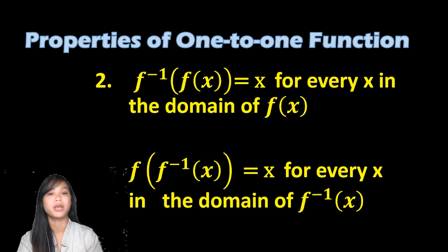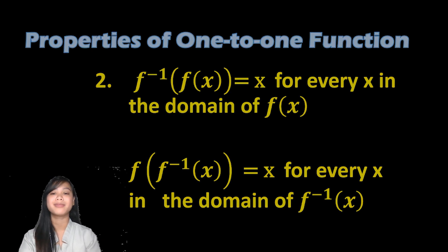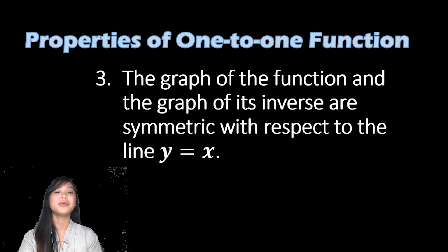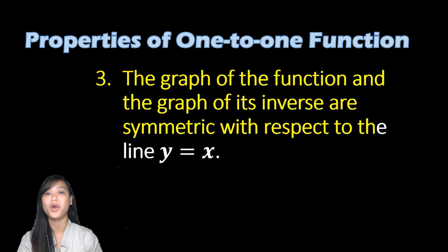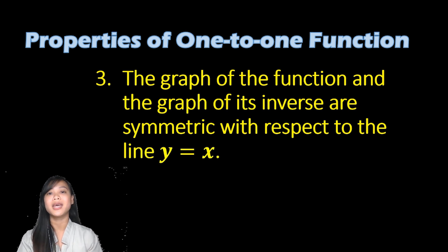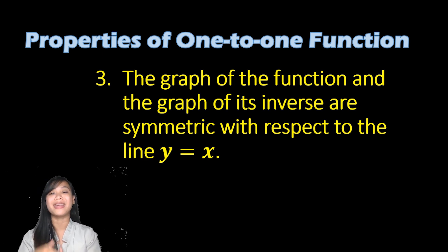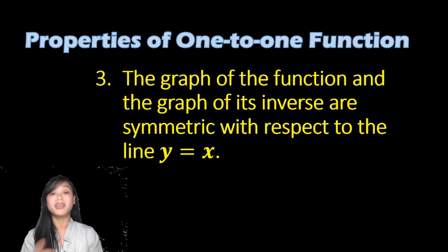For the third property, the graph of the function and the graph of its inverse are symmetric with respect to the line y equals x. In other words, the graph of the inverse function is just a mirror image of the graph of the function itself.